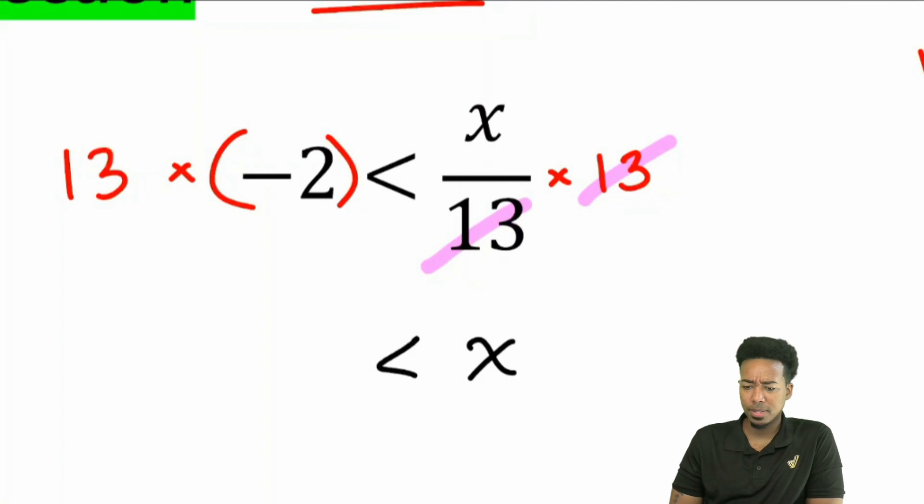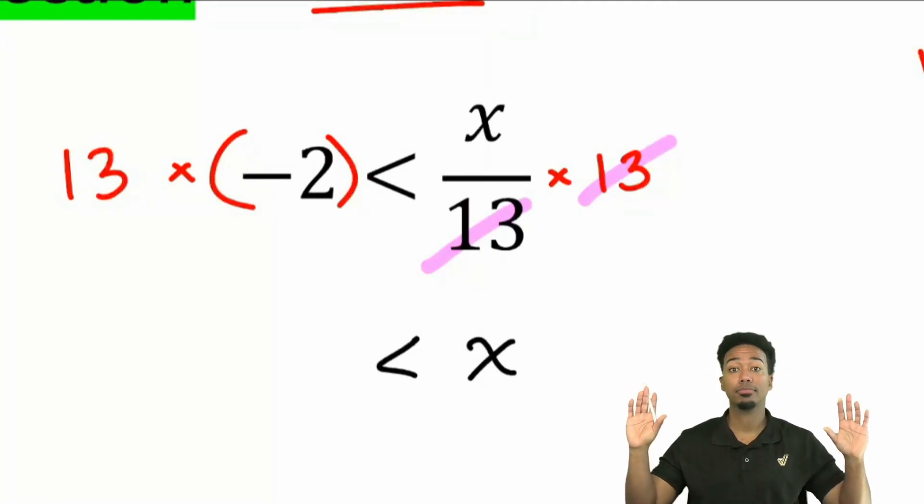Should I flip it? Okay, I see a lot of people saying, yeah, flip it. Some people saying no. What was the rule that I said? When you do what to both sides, you flip it. When you do what to both sides, you flip it. What was it that I said? When you multiply or divide by what? Yeah, that's exactly correct. There's no negative. I told you when you multiply or divide both sides by a negative, you flip the symbol. When I did this here, I multiplied both sides by 13. Is that 13 negative? Nope, not negative. So don't flip it. Not negative. So don't flip it.